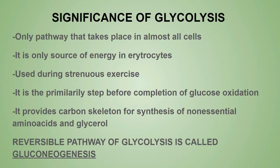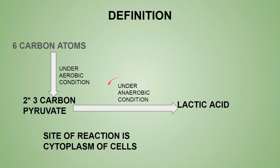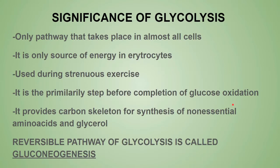During strenuous exercise, glycolysis is the only way to obtain energy, because less oxygen is available. Through this anaerobic pathway, pyruvic acid is converted to lactic acid and energy is derived. Glycolysis also provides carbon skeletons for some non-essential amino acids and glycerol.